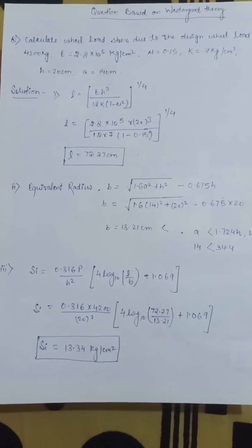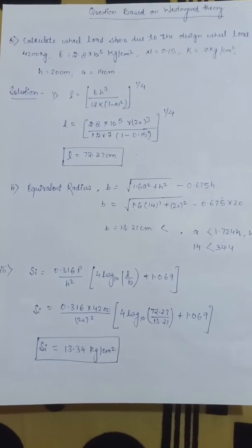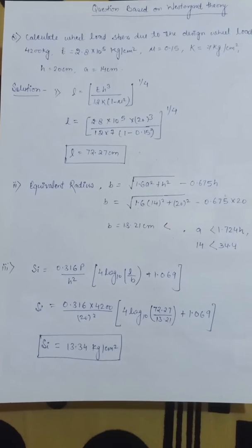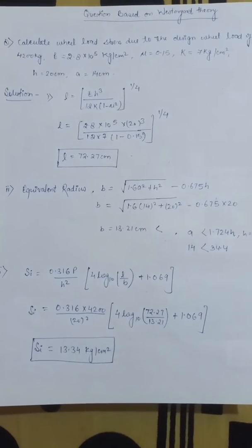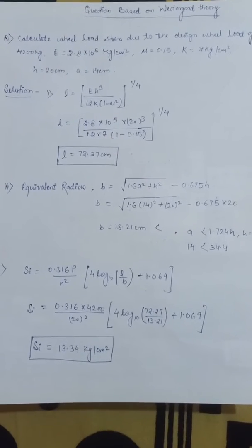Small h is slab thickness which is given in the question as 20 cm. Small a is radius of contact area which is given in the question as 14 cm.